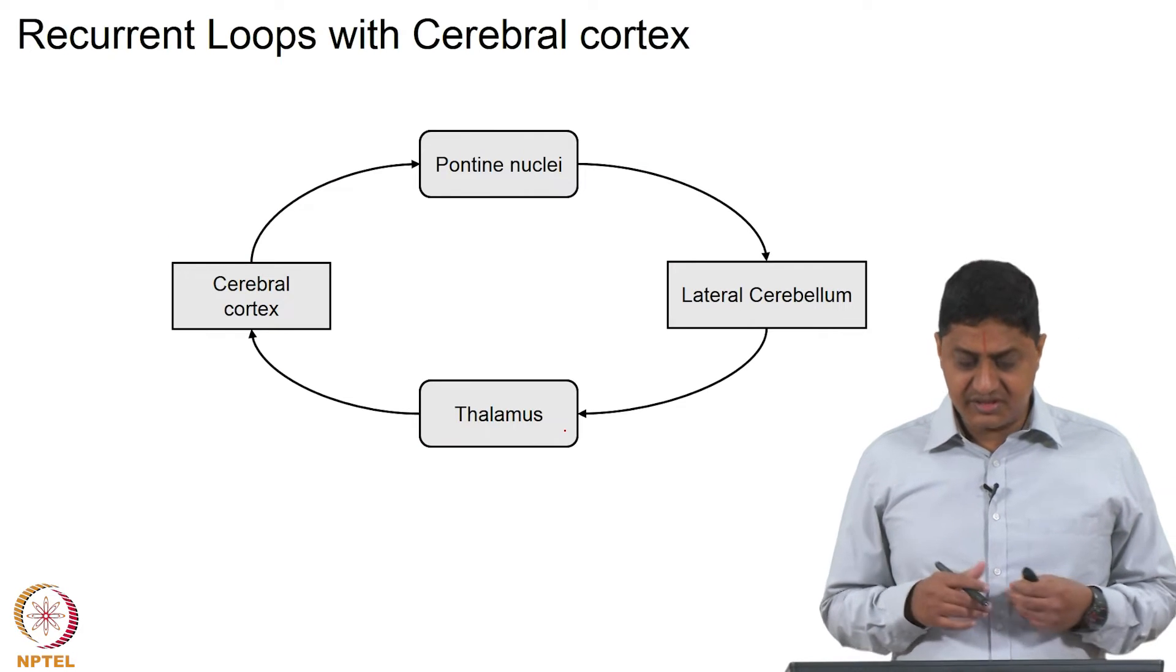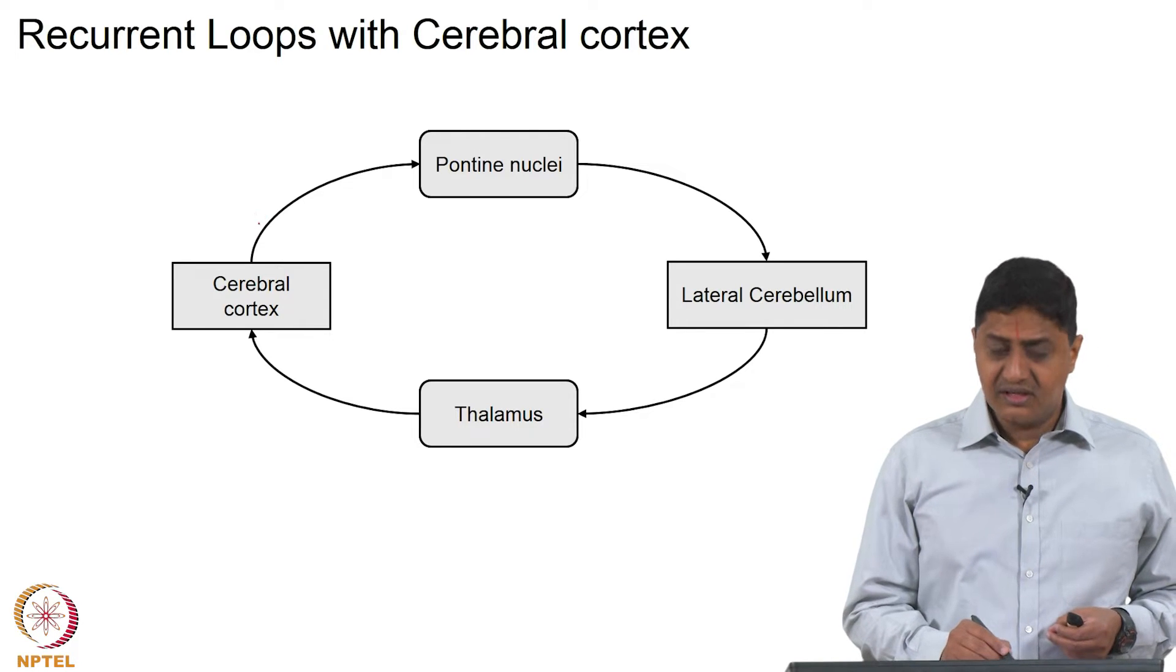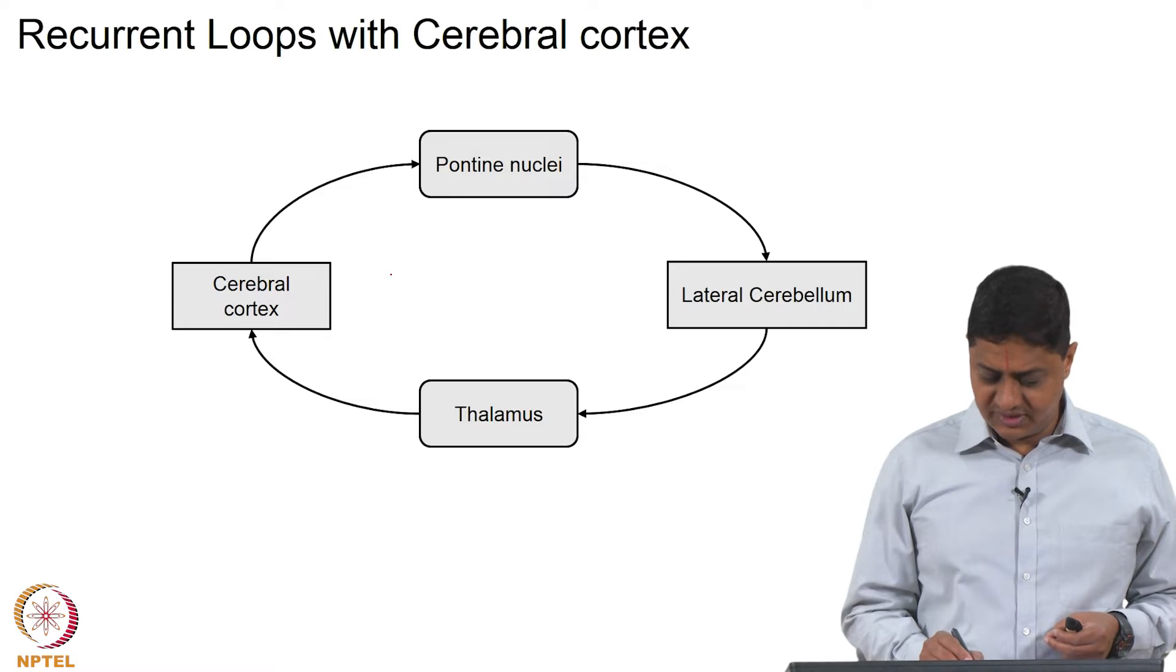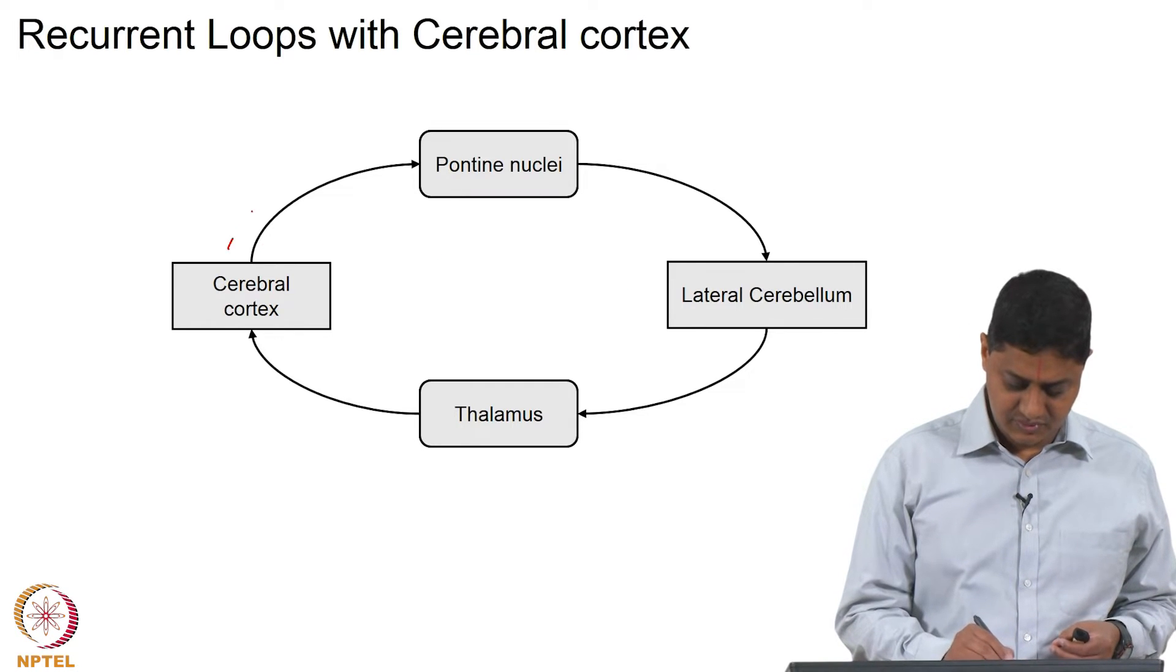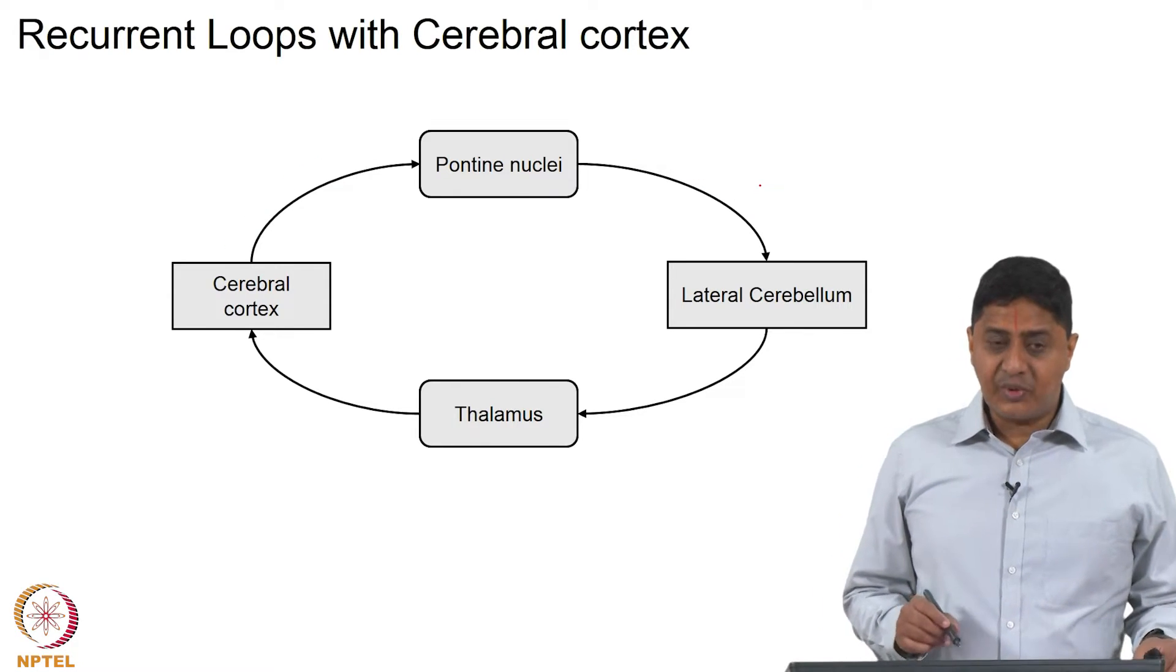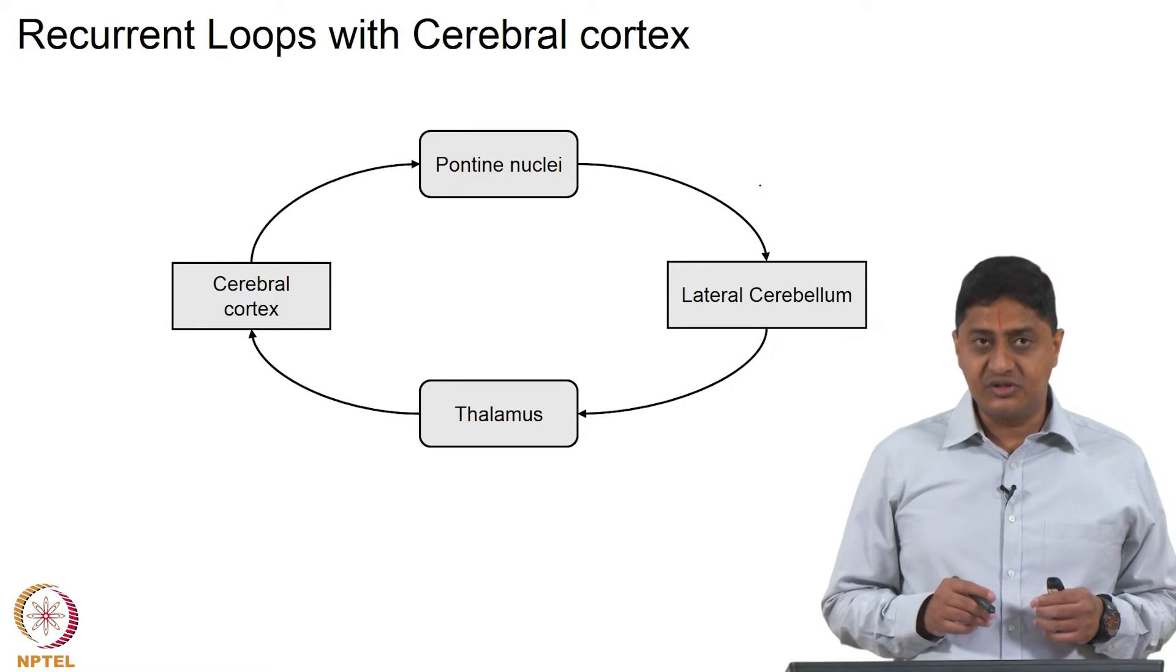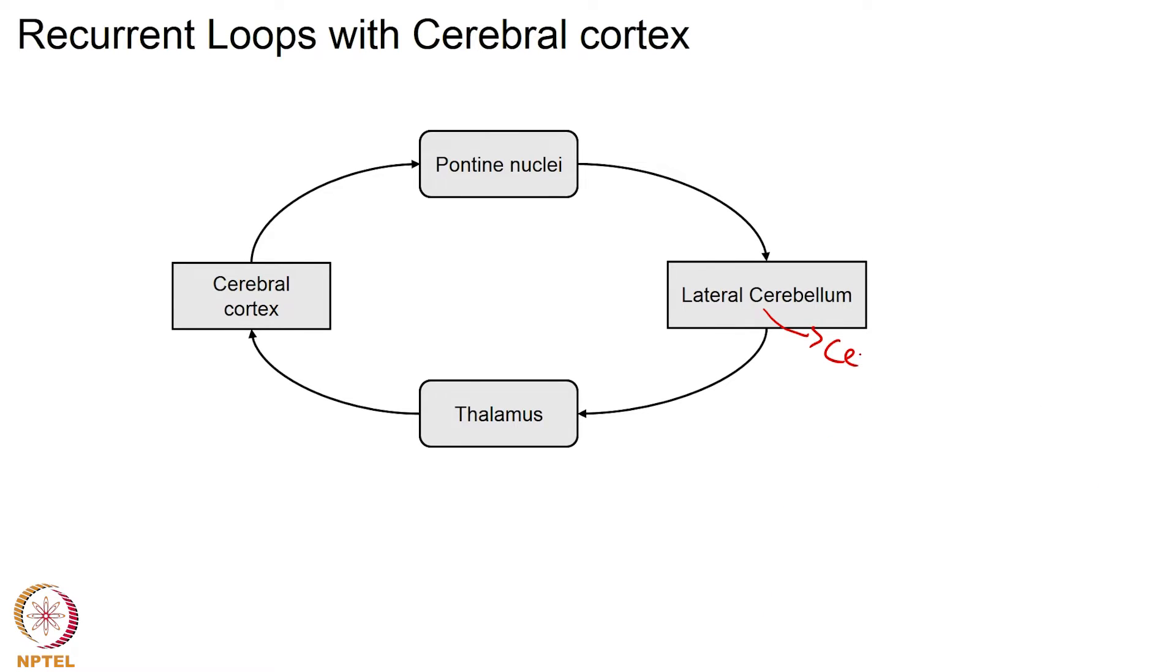A major recurrent loop with the cerebral cortex. The cerebral cortex sends information to the cerebellum not directly, but rather through pontine nucleus or through pons. Pons serves as an important source of input to the lateral cerebellum. What do we mean by lateral cerebellum? Lateral cerebellum means cerebro-cerebellum; that is the reason this region of the cerebellum is also called cerebro-cerebellum.